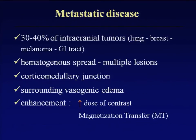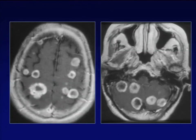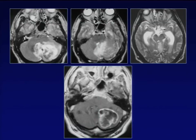Starting with metastatic disease: they typically have hematogenous spread and locate at the corticomedullary junction, producing multiple lesions. We all know there is extensive vasogenic edema, and all metastatic disease in the brain enhances. On CT and MRI you see the nodular pattern of enhancement and ring-like, sharp, well-defined margins with vasogenic edema out of proportion — multiple ring-like enhancing lesions typical of metastatic disease.